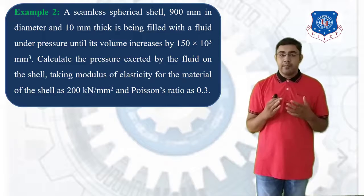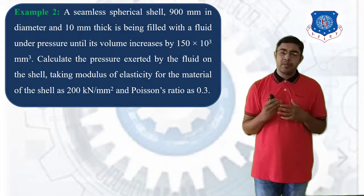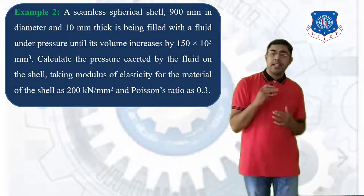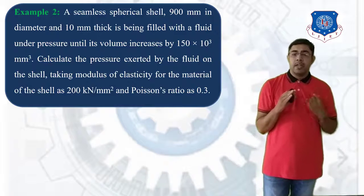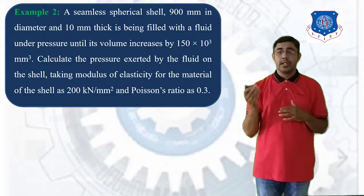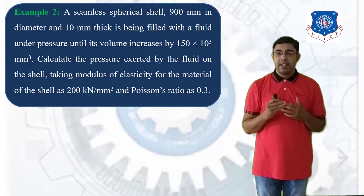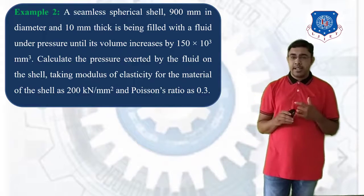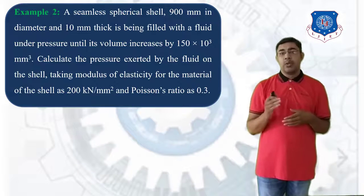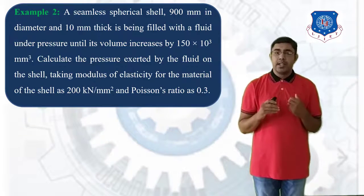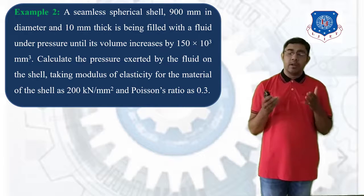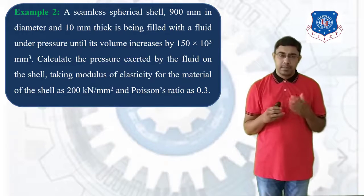The modulus of elasticity for the material of the cell is 200 kN/mm² and Poisson's ratio is 0.3. The volume increase delta V is given and we have to find the pressure intensity or pressure exerted by the fluid in this spherical cell.